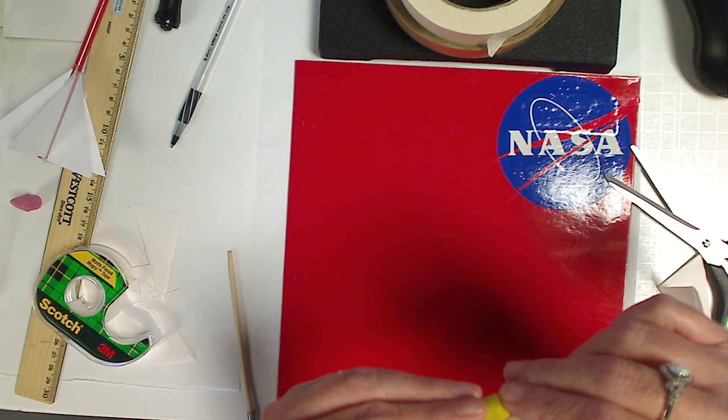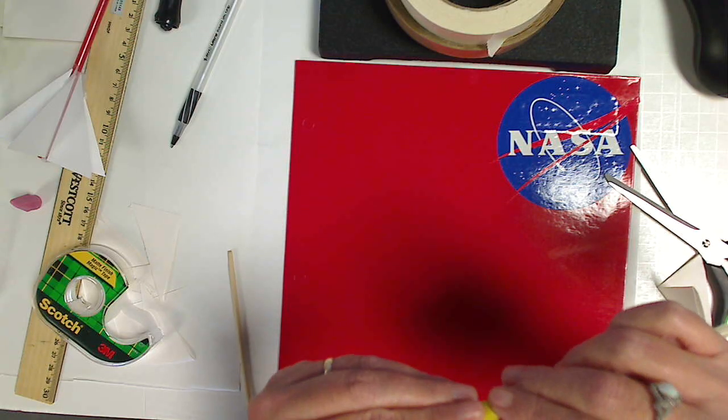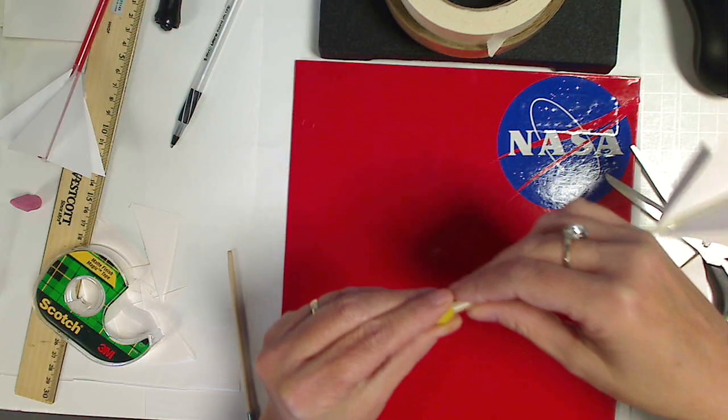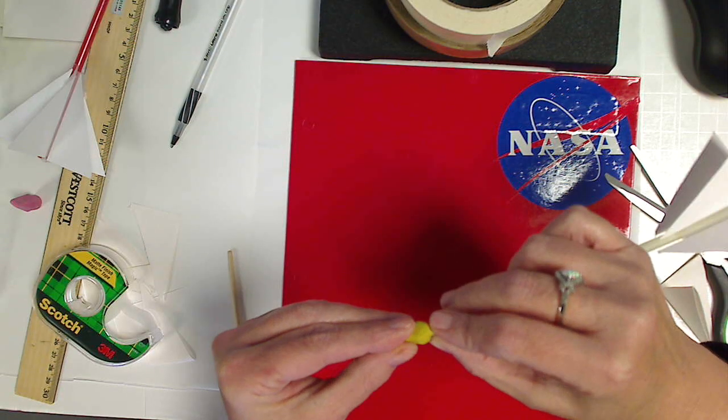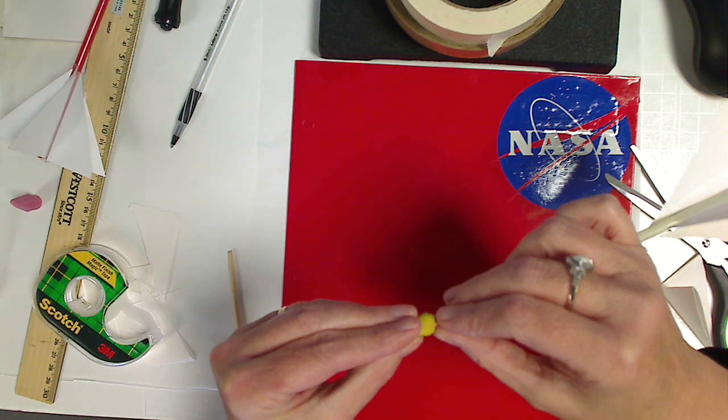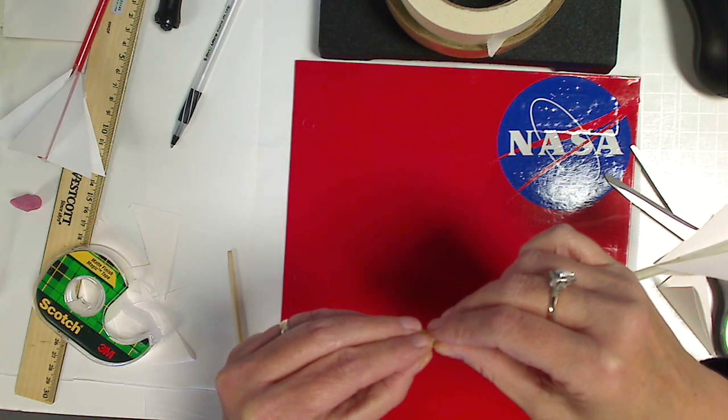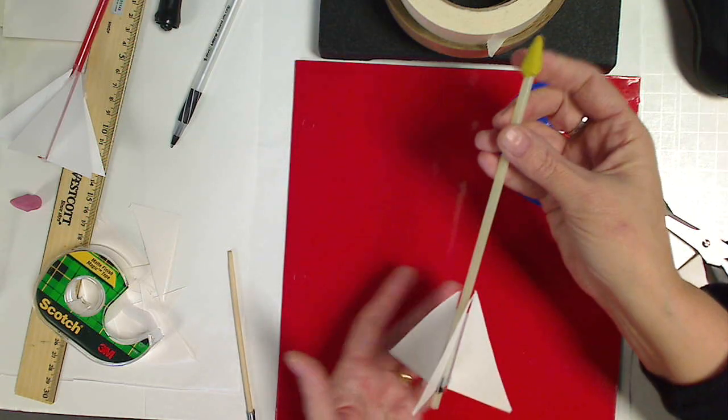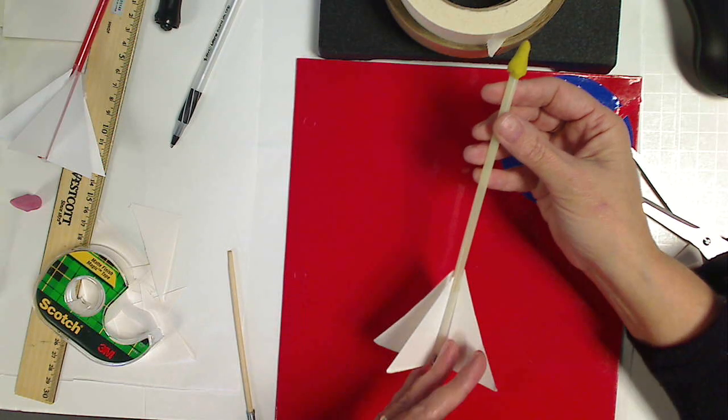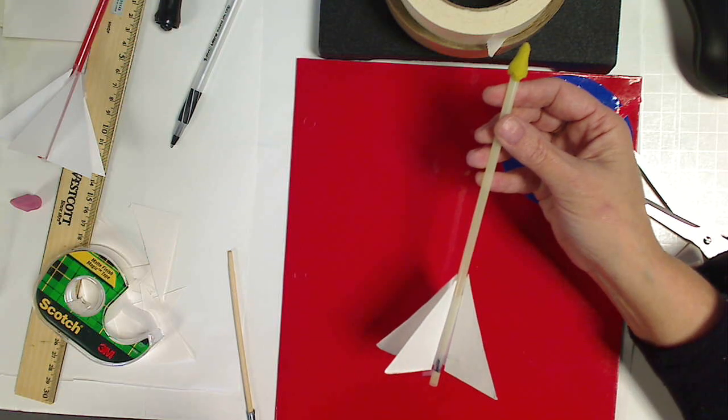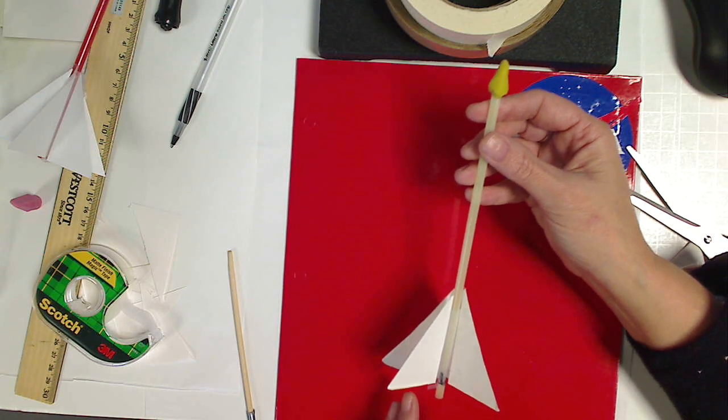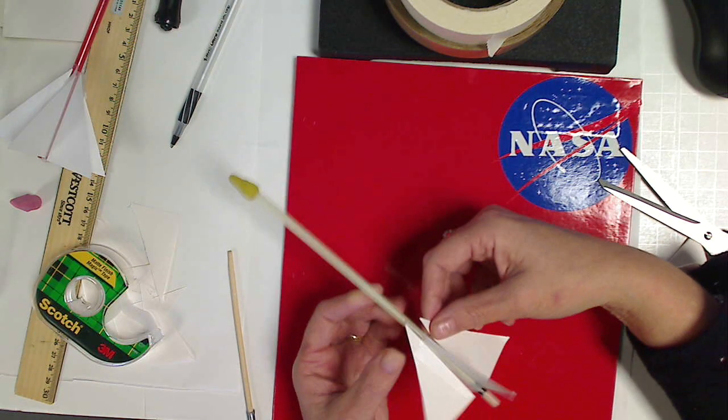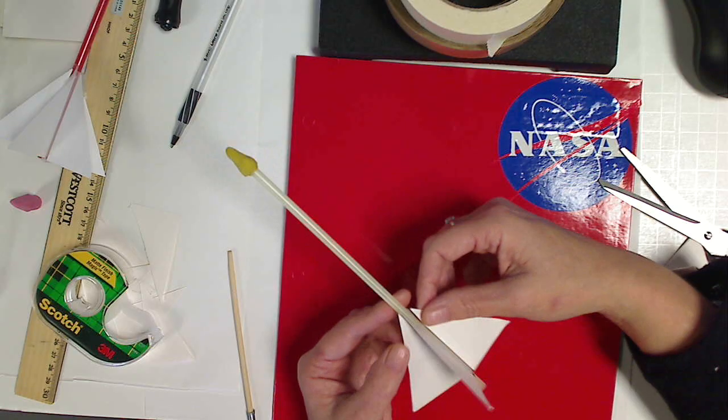But realize the shape of the cone will either help the rocket in flight or it will hinder it. And so part of the activities that we're going to be doing today is to design a rocket and experiment with it and determine under what conditions a particular design or launch angle or even launch pressure works better.